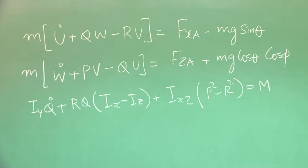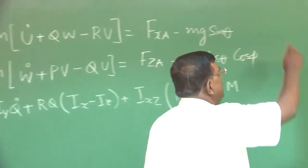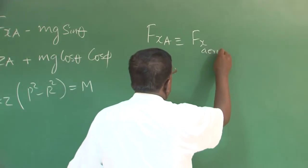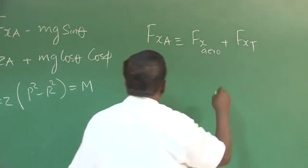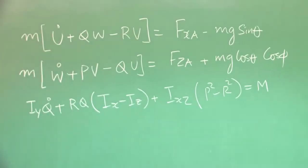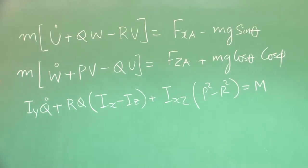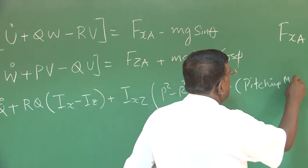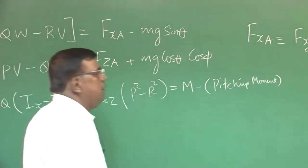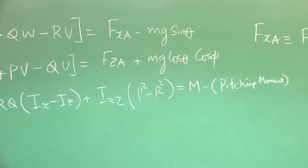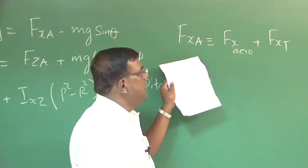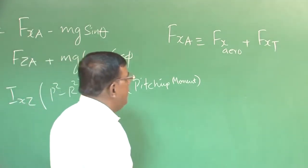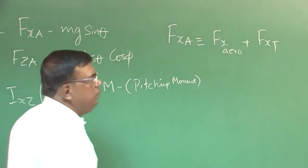On the right-hand side, Fxa equals aerodynamic force along x plus thrust force along x. Similarly, Fza equals aerodynamic force along z plus thrust force along z. M is the pitching moment. To simplify, we assume that the treatment applied to the aerodynamic part of Fxa can be similarly extended to the thrust component Fxt.